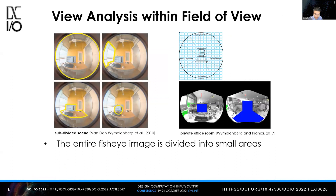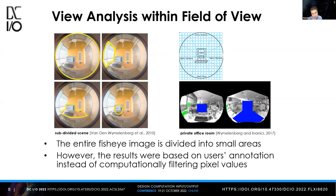Some studies focused on view analysis within the field of view. For example, the entire fisheye image is divided into small areas. The left study focused on target spaces like desk, monitor, and glazing space, and the right study asked users to label the overlaid regions. However, the results were based on users' annotations instead of computationally filtered pixel values.